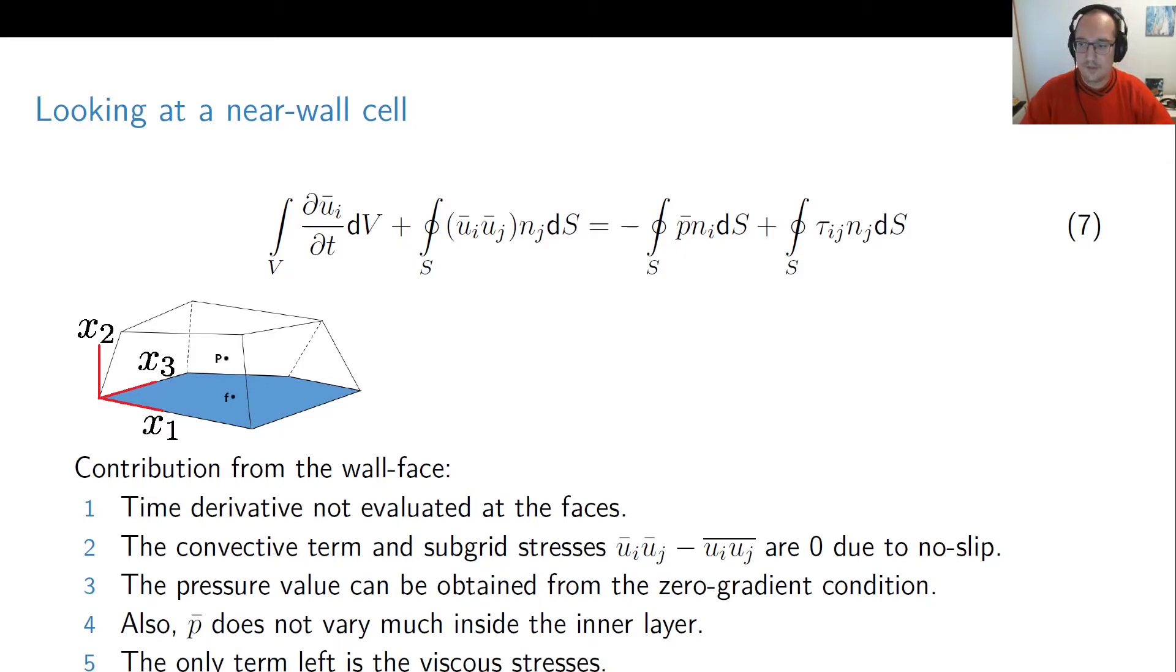Moreover it is physically okay to copy the value from P to F because actually in the inner layer of a turbulent boundary layer pressure does not change much in the wall normal direction. We will use this fact later when we look at various types of wall stress models. So it's both physically and numerically fine to simply copy the value we have in the cell center to the wall. So the only term which remains is the viscous stress.